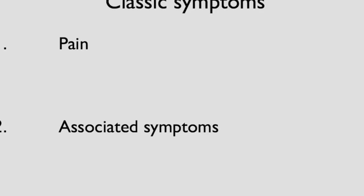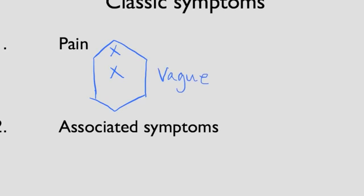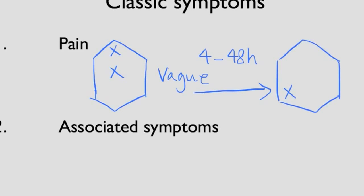The classic pain for appendicitis is a two-step process. The first step often starts with a paraumbilical or epigastric pain, as the appendix lumen is distended and triggers visceral pain fibers. The pain is often vague — patients can describe it as dullness, an ache, or indigestion. Over the next 4 to 48 hours, the pain classically migrates to the right lower quadrant as the inflammation triggers the somatic pain fibers, and it becomes more localized.